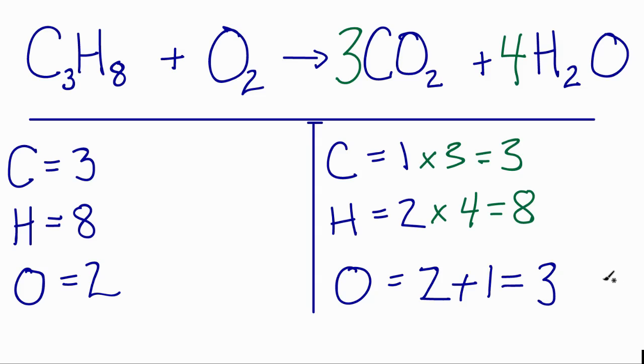And we need to update our oxygens because we've changed the coefficient in front of the products there. So let's do that. I've got three times two. I have six oxygens there, plus four times the one. That's four. And that gives me a total of 10 oxygens on the product side.